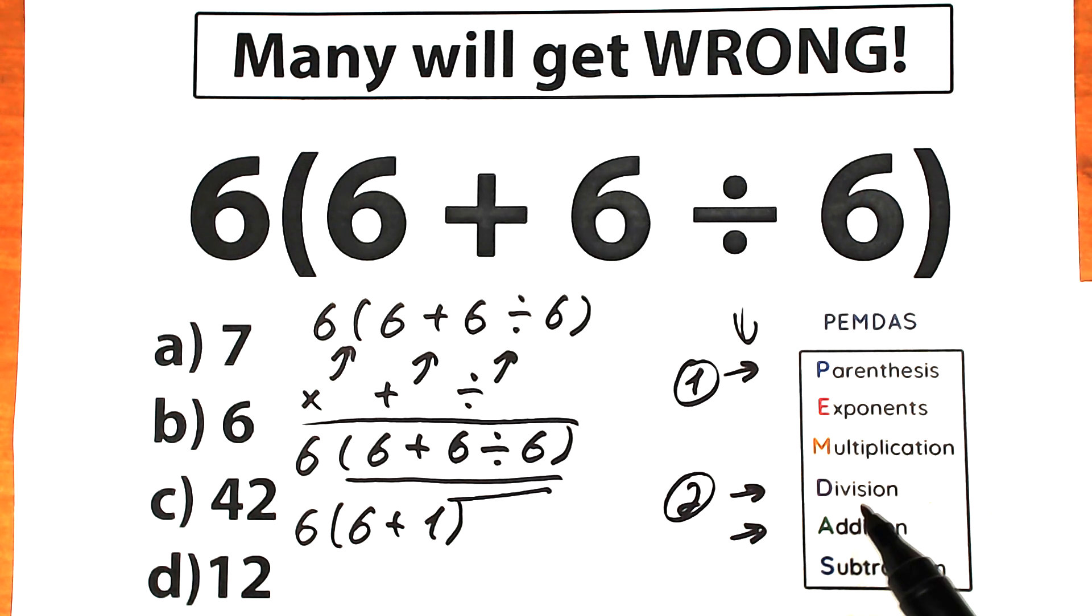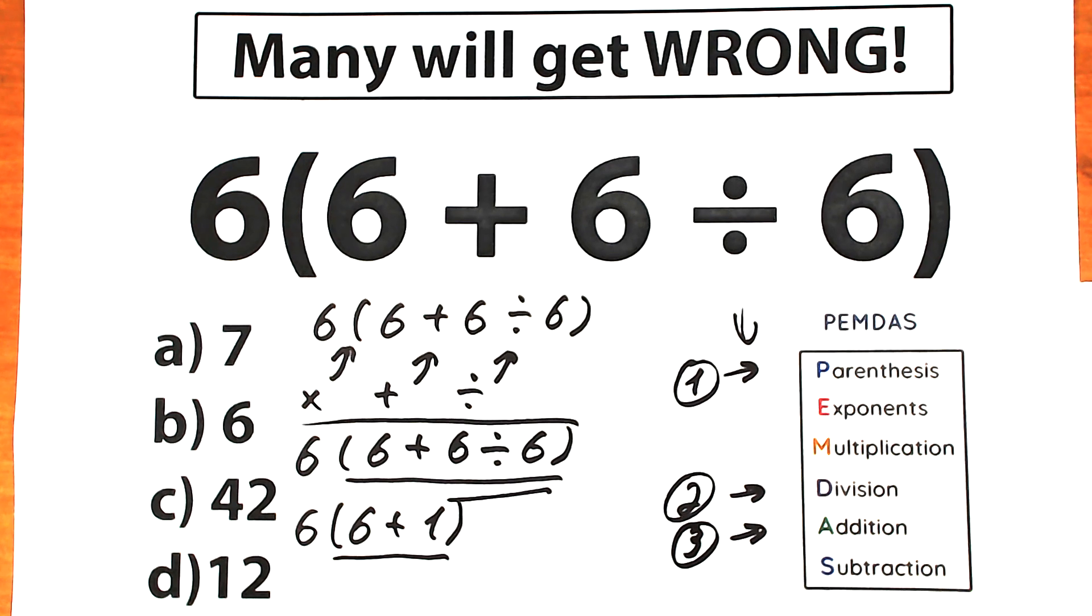So we complete our second step division. Our third step is addition because addition sign is inside parentheses, right? This is our third step is addition. So what do we have? We have 6 times 7.